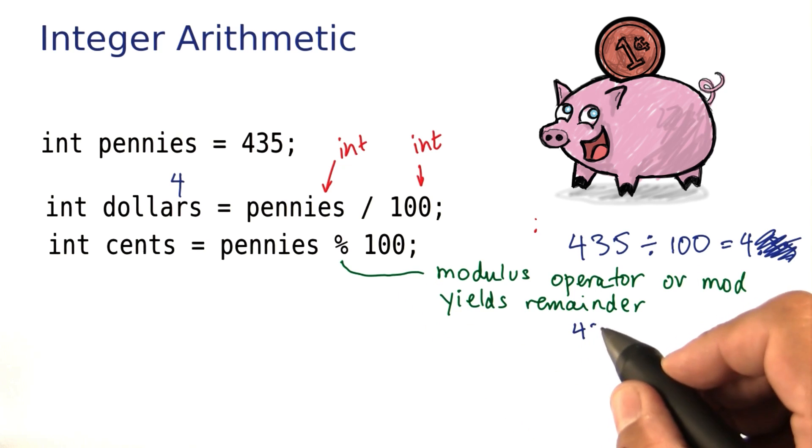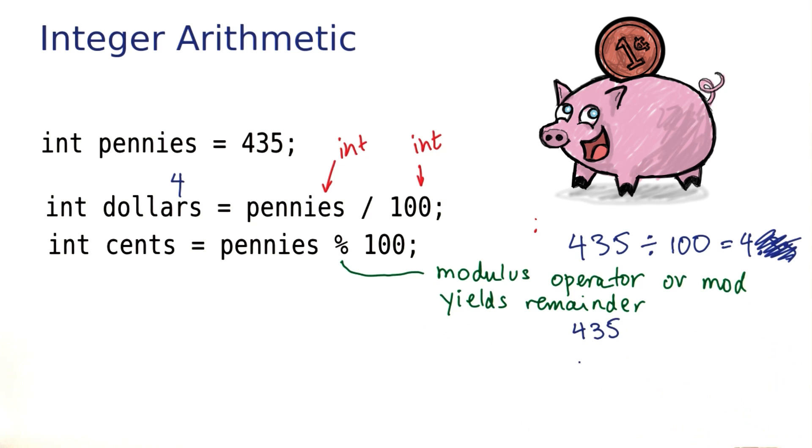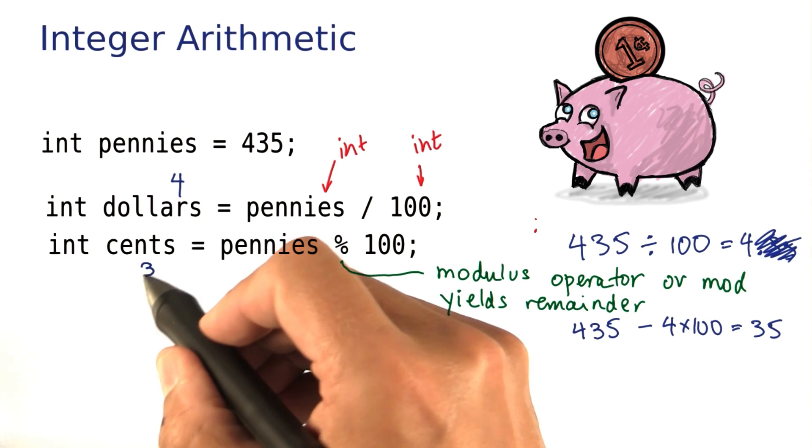Let's try that out with 435. 435 divided by 100 is 4, so there's 4 times 100 going in here. When we take those off, we're left with a remainder of 35 that was no longer divisible by 100. That's what the remainder operator yields.